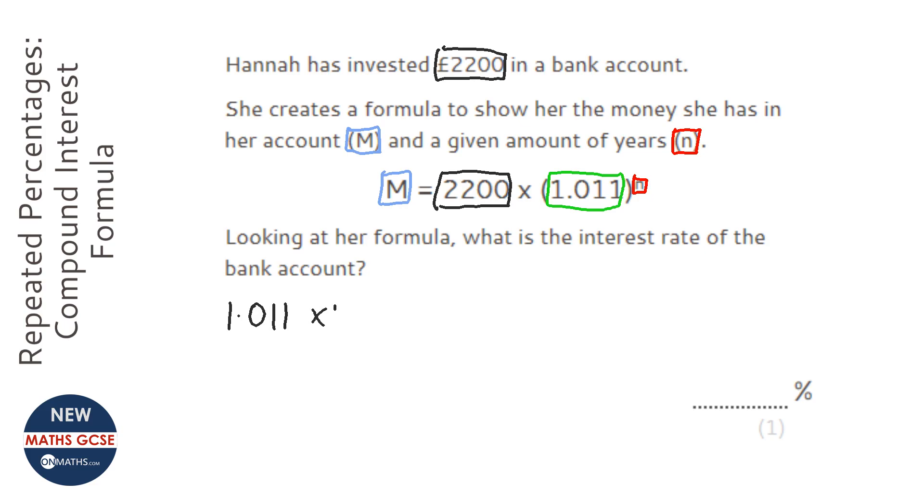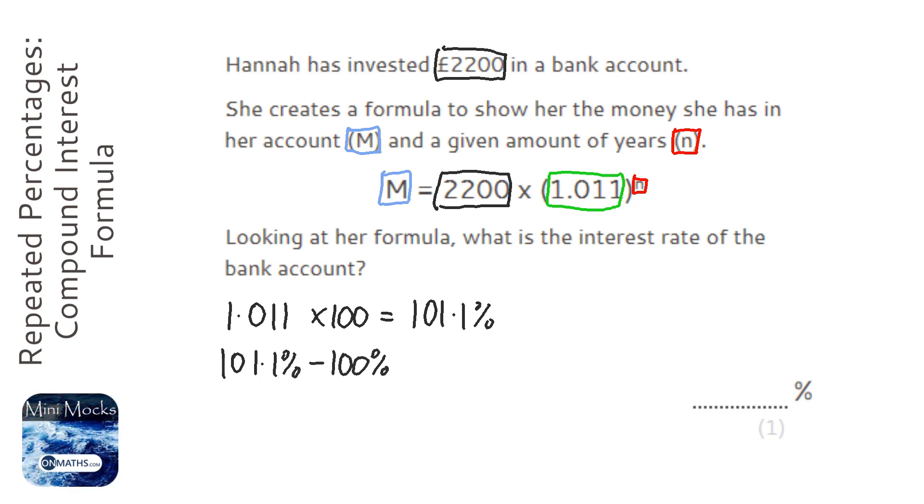We're going to times it by 100 to get the percentage, so it's 101.1%. And then what we're going to do is just take away 100% because that's the initial amount and see what we've done to it.